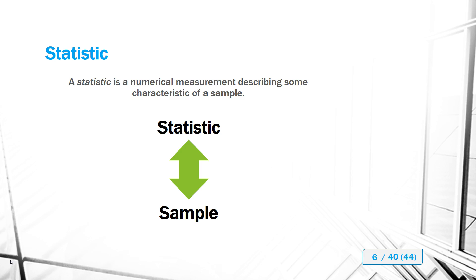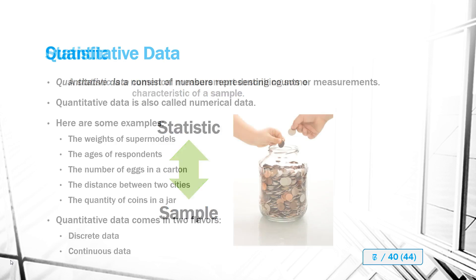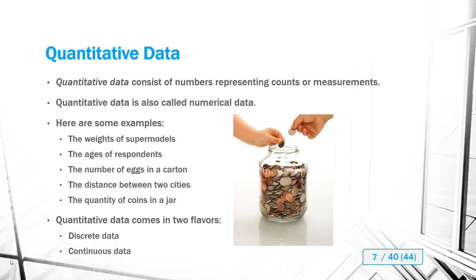Parameters go with populations — same first letter P. Statistics go with samples — same first letter S. Now, quantitative data consists of numbers that represent counts or measurements; the numbers are communicating a quantity. Numbers may not necessarily be quantitative data — they could be qualitative — but when we're talking about quantitative data, the number represents a count or measurement.